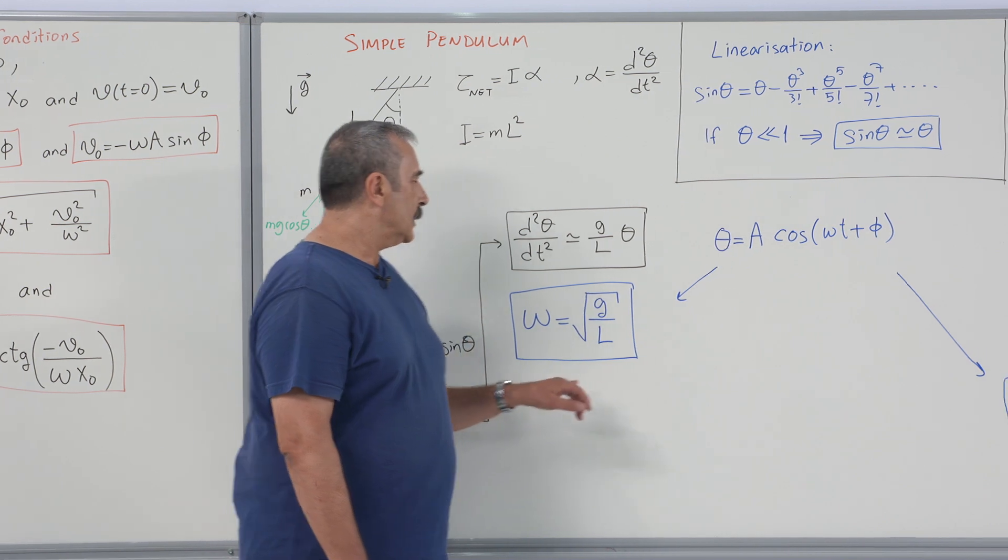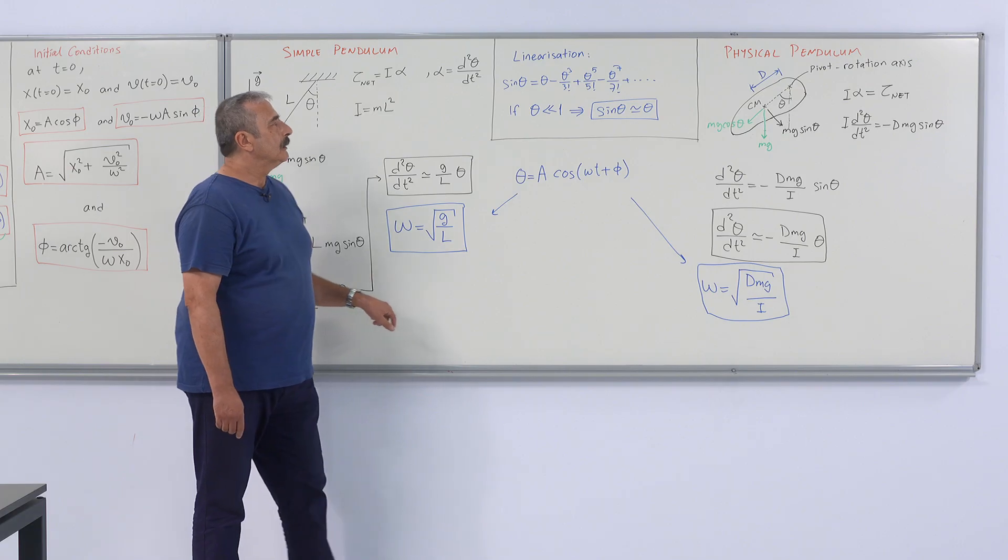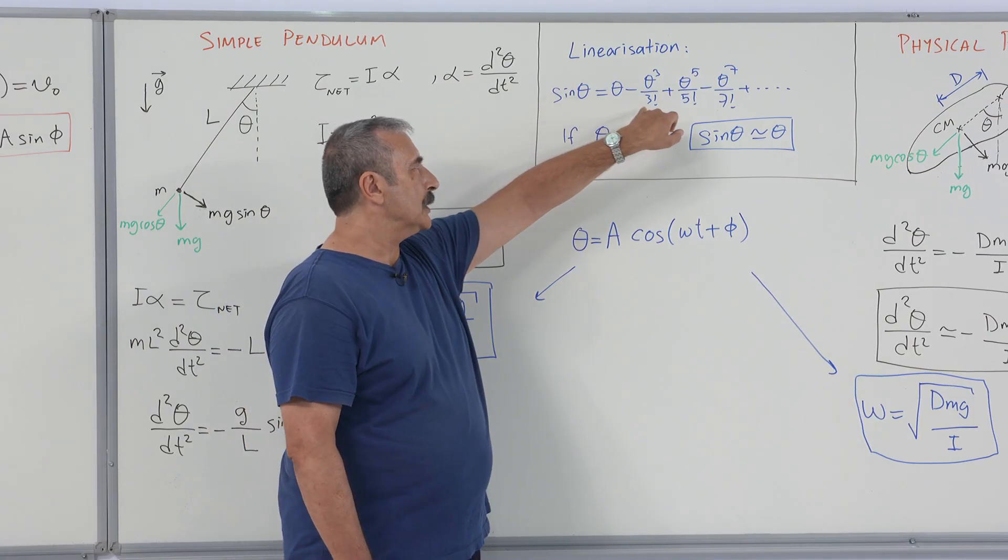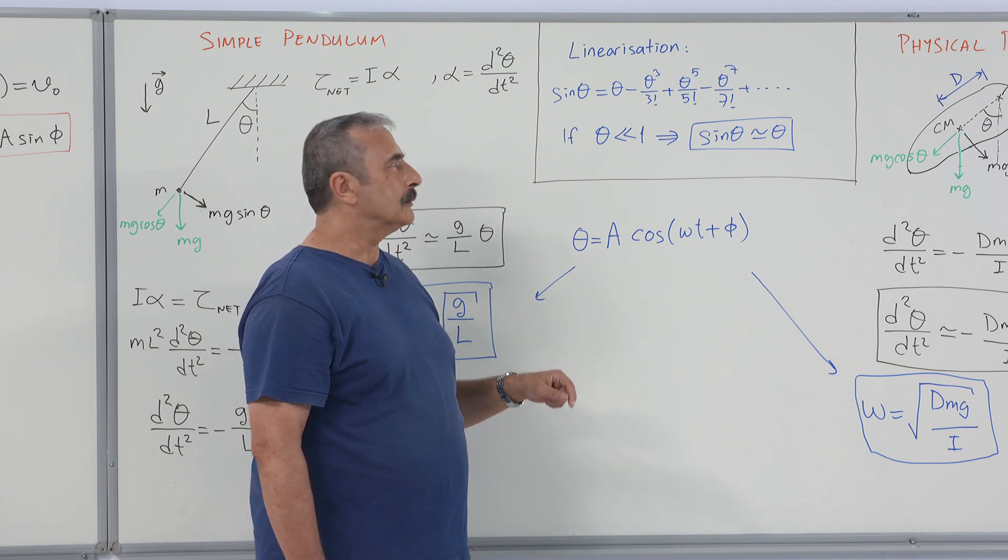Now, the way for that is to linearize this non-linear term sine theta. Sine theta will have a Maclaurin expansion in this form, about zero angle.